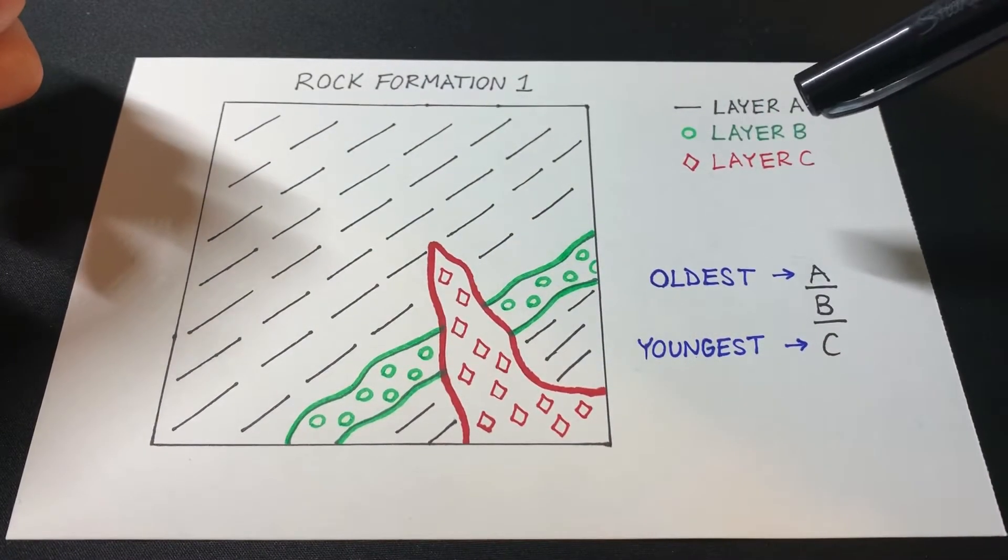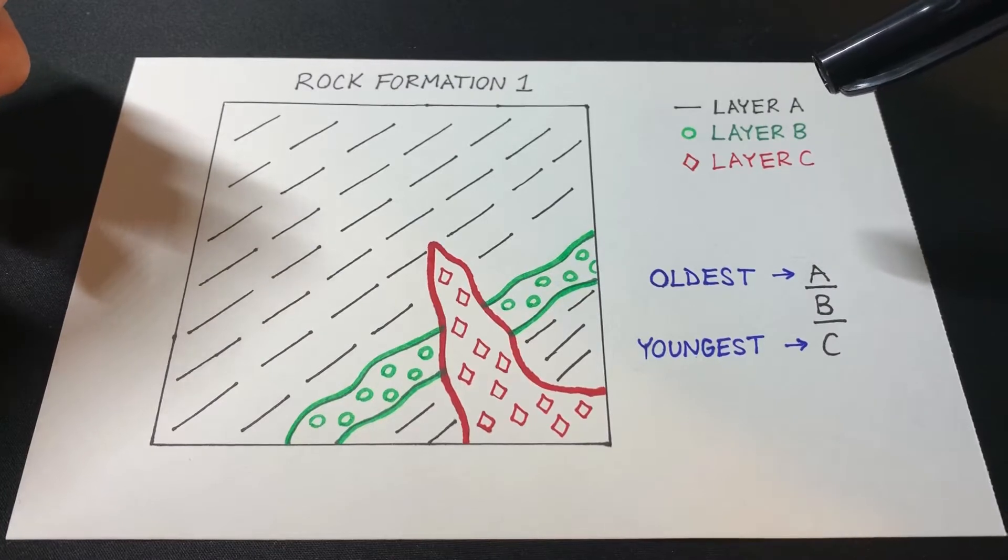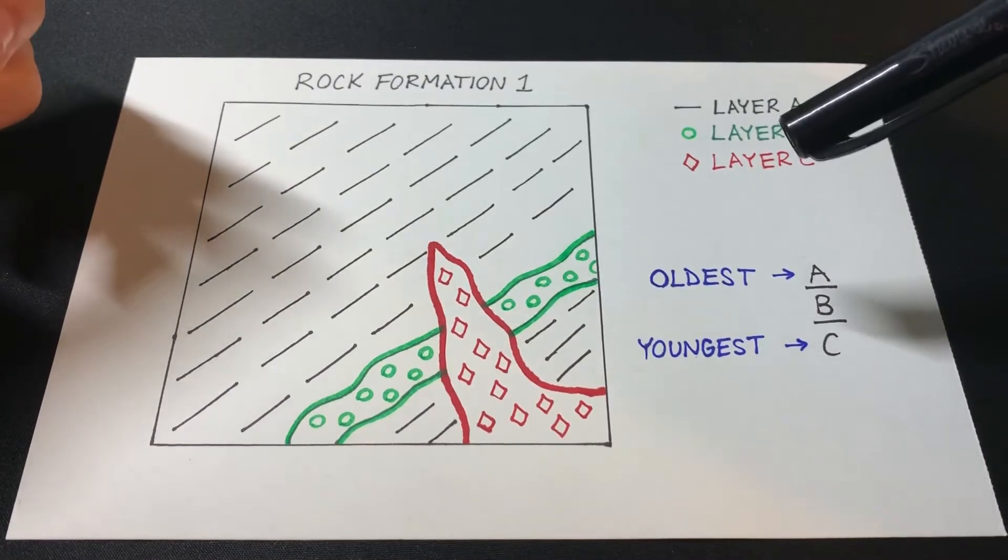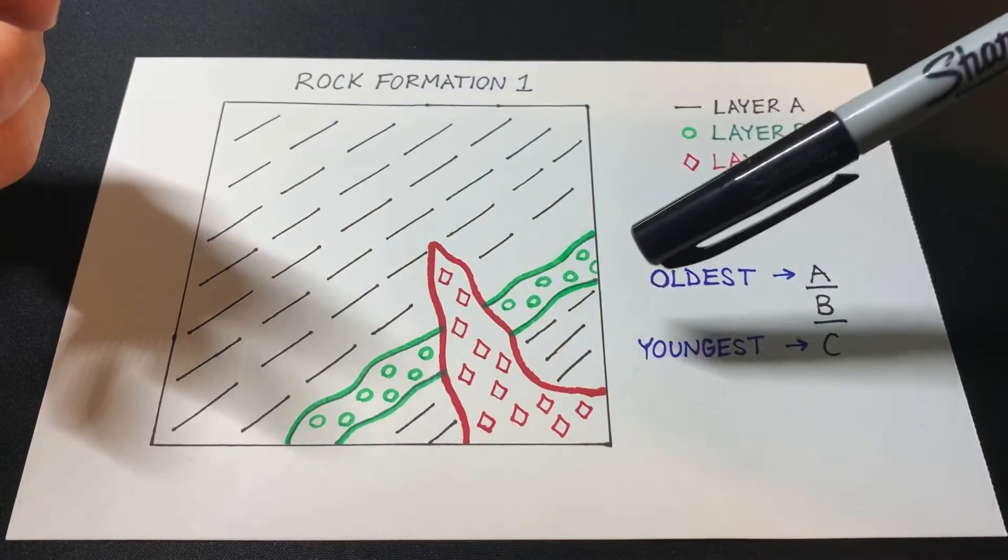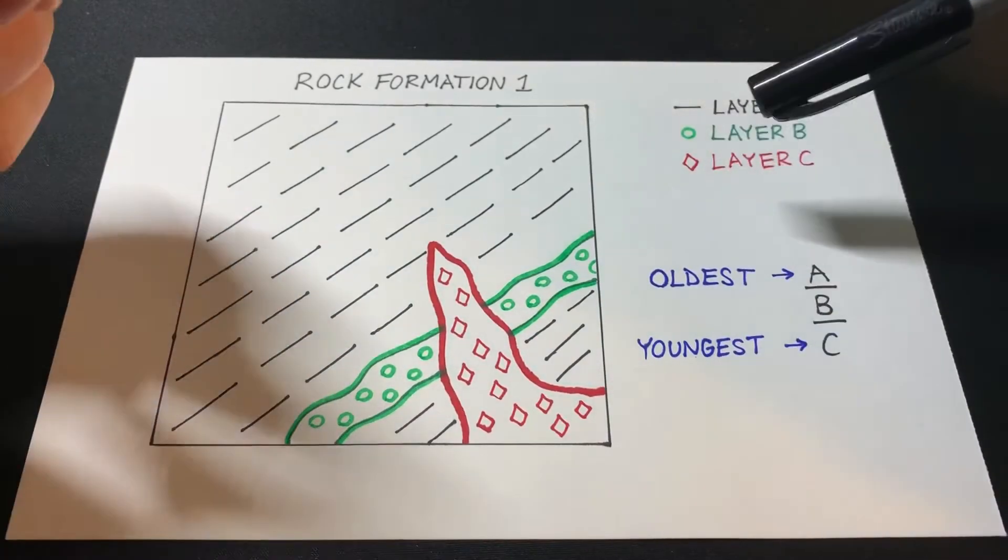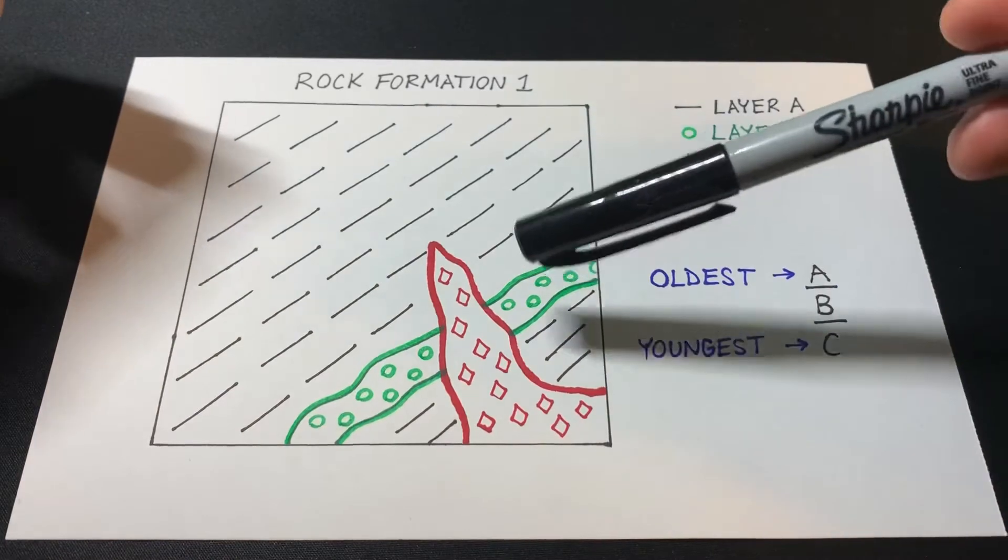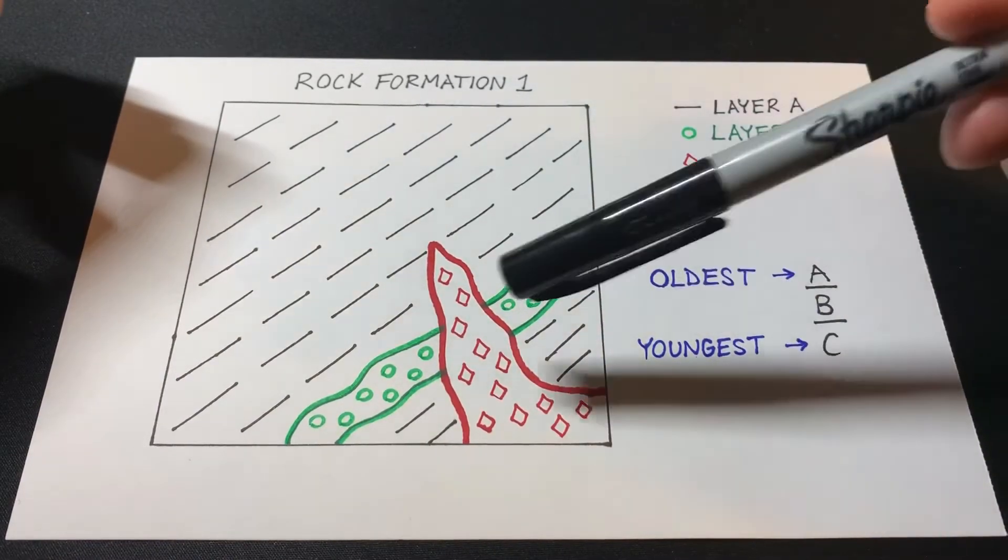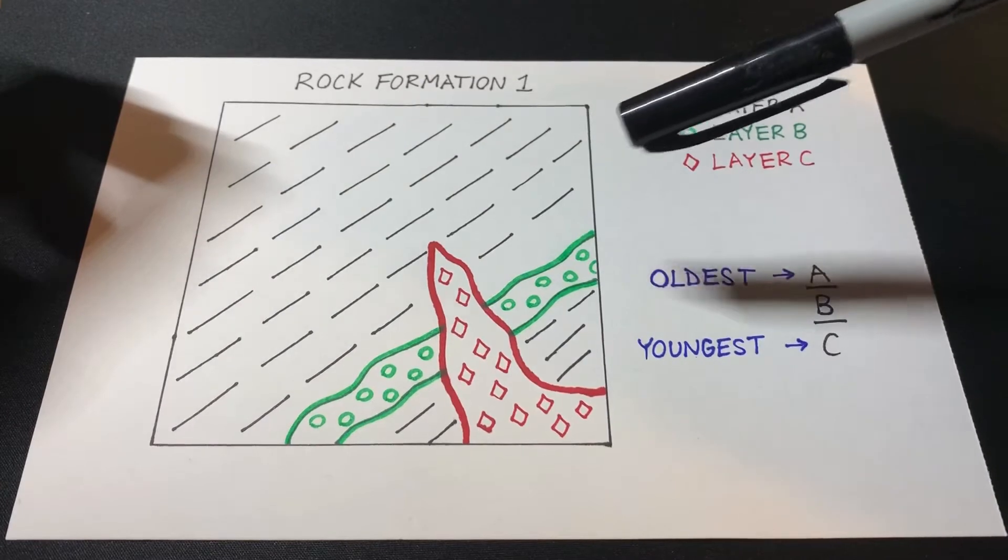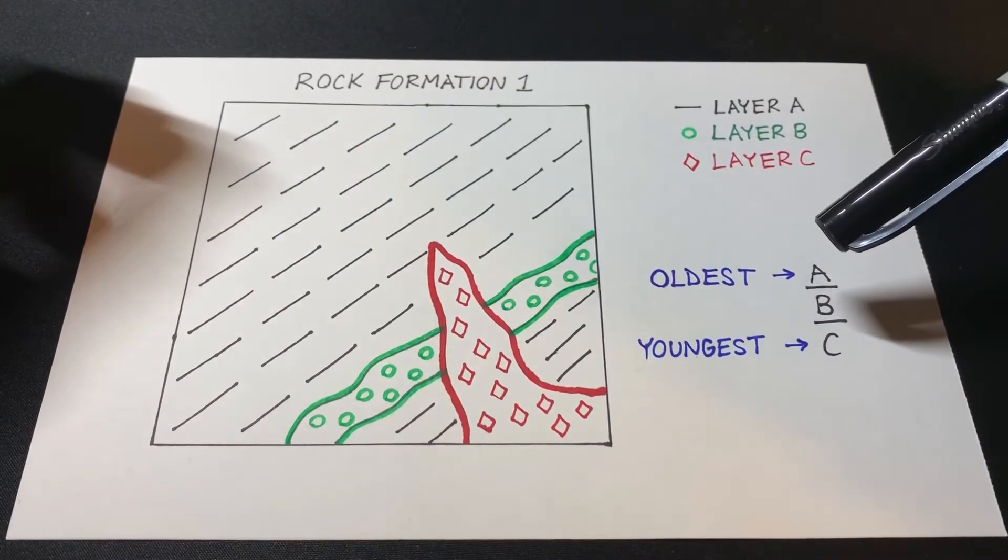Now the way that we determine the oldest and the youngest rock layers is by the principle of cross-cutting relationships. We have to know which ones are cutting across which. So from this figure, we know that both layers B and C are cutting across A automatically. So that would make A the oldest, right?